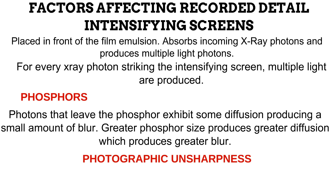Another cause of photographic unsharpness is damaged cassettes. When a cassette is damaged, there is poor contact between the intensifying screen and the film. This space allows diffusion of light to occur, producing photographic unsharpness.